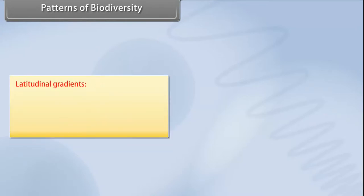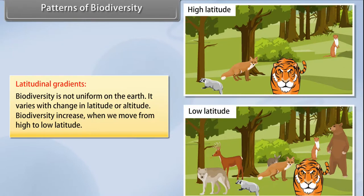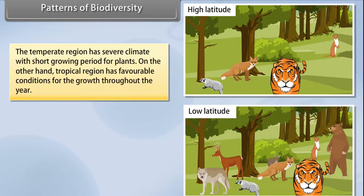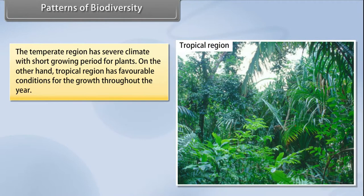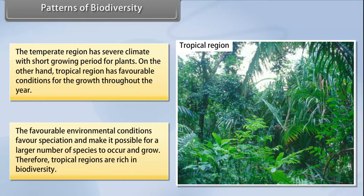Latitudinal gradients: biodiversity is not uniform on the earth; it varies with change in latitude or altitude. Biodiversity increases when we move from high to low latitude. The temperate region has severe climate with a short growing period for plants, whereas the tropical region has favorable conditions for growth throughout the year, favoring speciation. Therefore, tropical regions are rich in biodiversity.